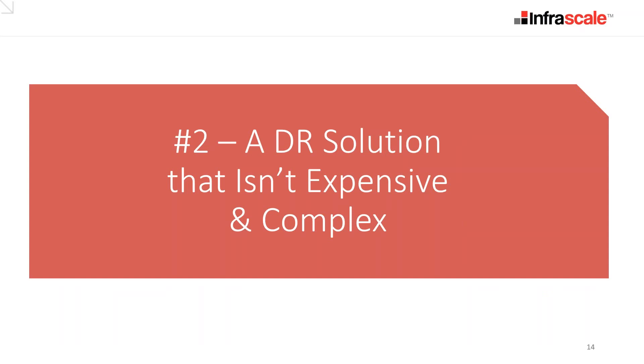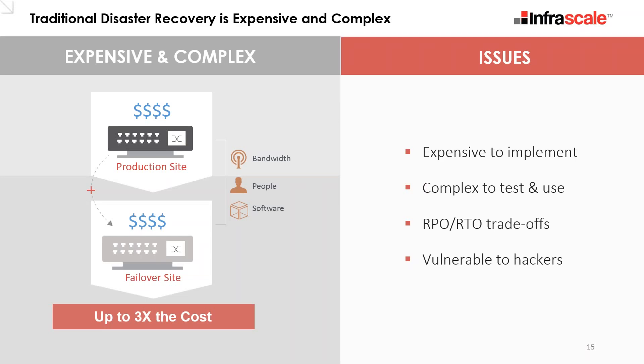The second way to take disaster out of disaster recovery is to get a solution that isn't expensive and complex. Some vendors can achieve the RTO and RPO we want, but not at the right cost. Most DR solutions replicate a production site to a failover site, which — due to bandwidth, people, and software — can cost up to three times as much. On top of the expense, it's complex to test, and vulnerable to hackers since security isn't built in. Infrascale delivers the business benefit of failover at the price point of backup.